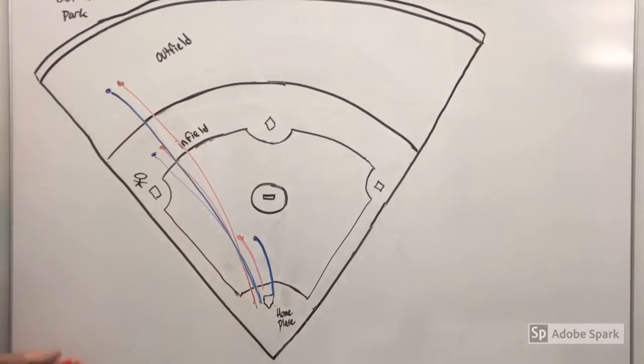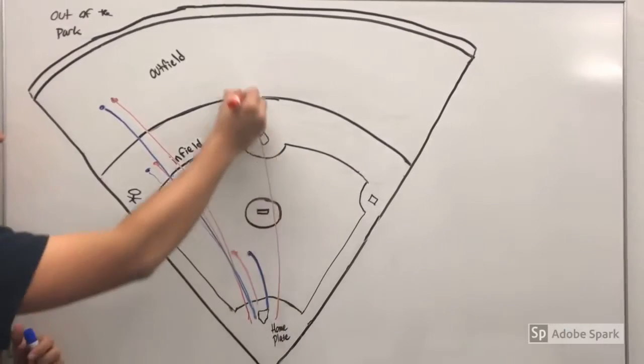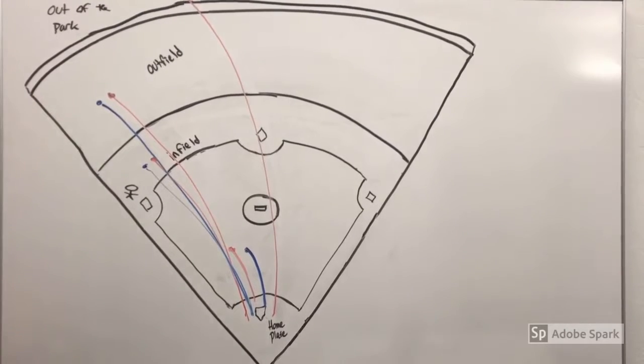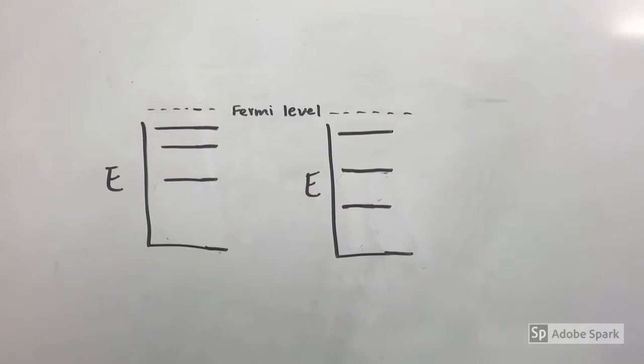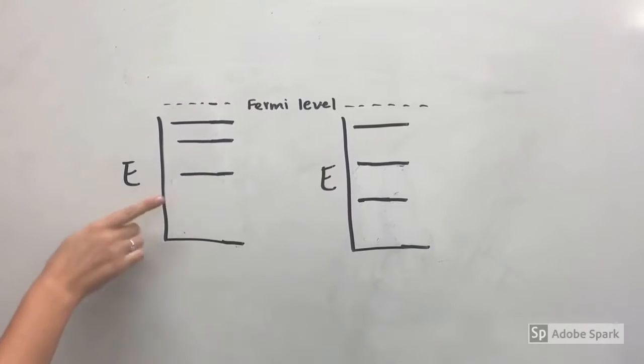And somewhat rarely, the ball is hit with such great energy that it actually leaves the park, and no amount of energy from the fielders will be able to return it back to home. Similar to how the baseball was hit into discrete regions, electrons exist at discrete energy levels.